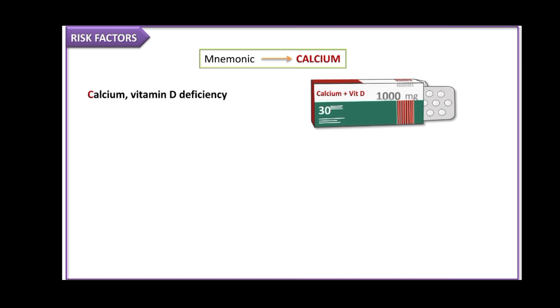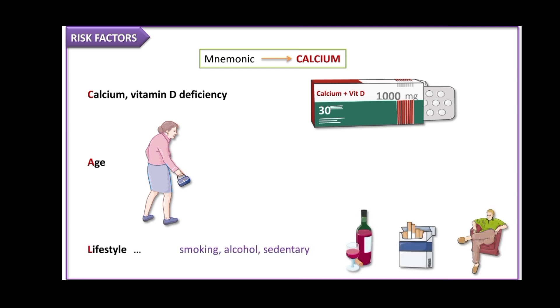There are several risk factors for developing osteoporosis, which you can remember using the mnemonic CALCIUM. C stands for calcium and vitamin D deficiency. A stands for age — with age, osteoblastic activity gradually slows down while osteoclastic activity continues, and levels of estrogen and testosterone fall.